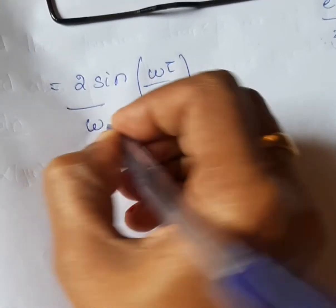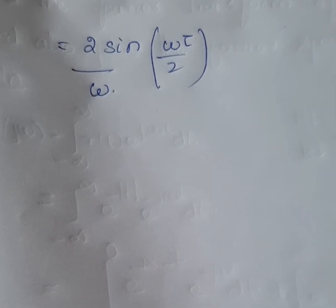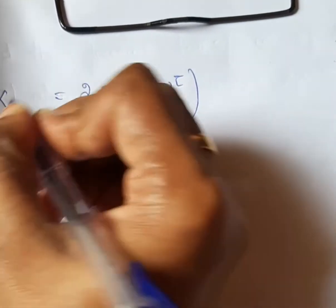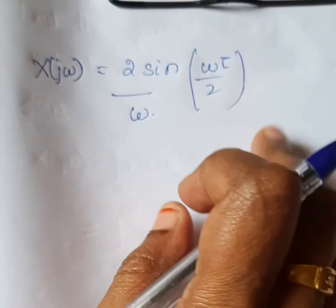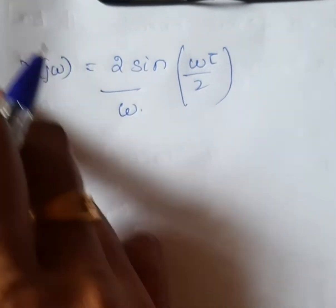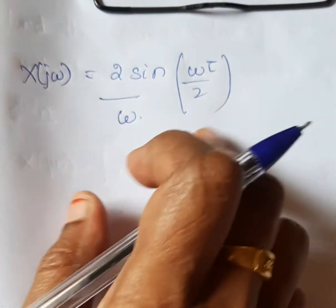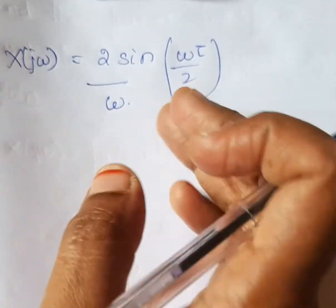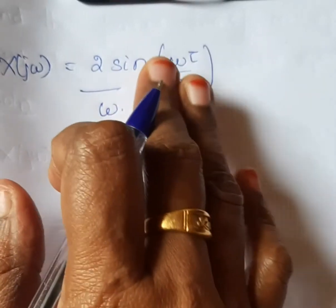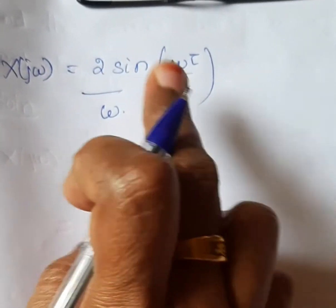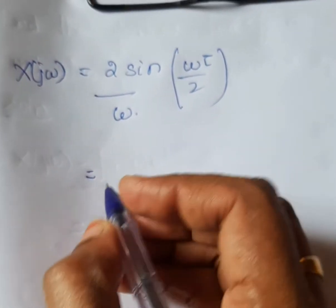So we get X(jω), the Fourier transform, as: X(jω) = (2/ω) · sin(ωτ/2). You can take this as the answer, or you can simplify further.